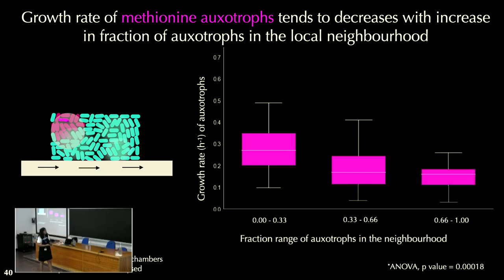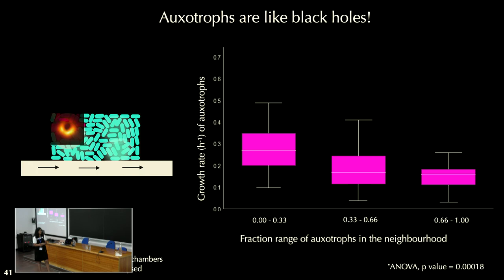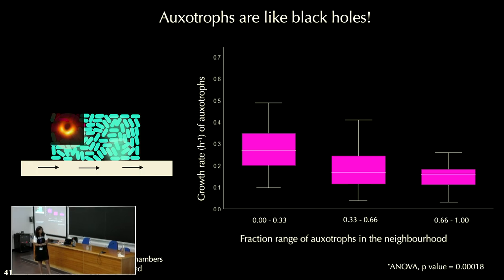On the left-hand side you can see the cartoon of that, demonstrated for one cell, but this has been done for all cells across chambers and this trend prevails. What I think is happening is that these auxotrophs are like black holes — they're taking up the amino acids being leaked by the wild type. The more auxotrophs you have, the least beneficial it is for the focal auxotroph in the center.